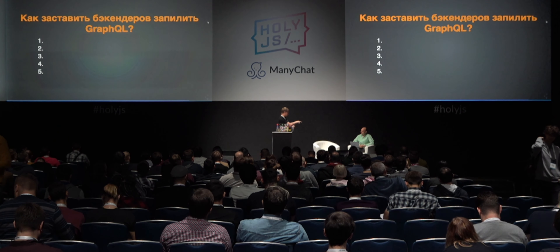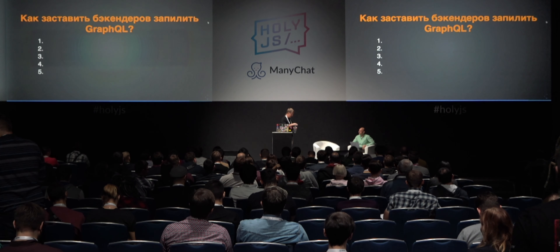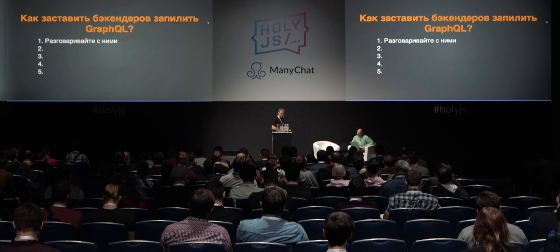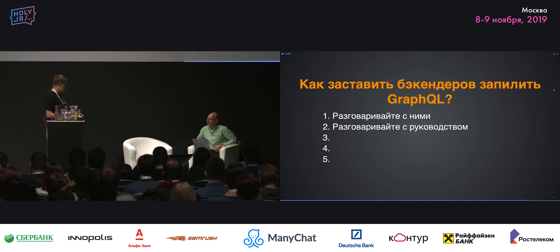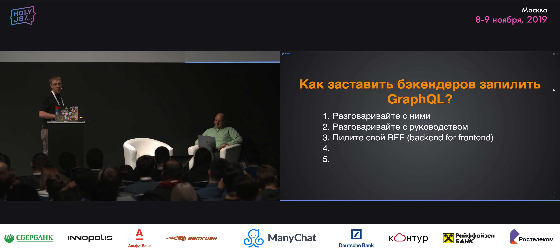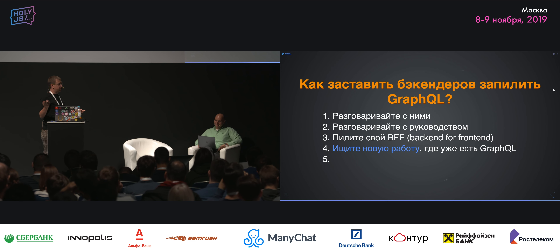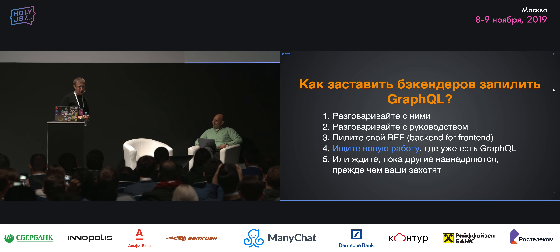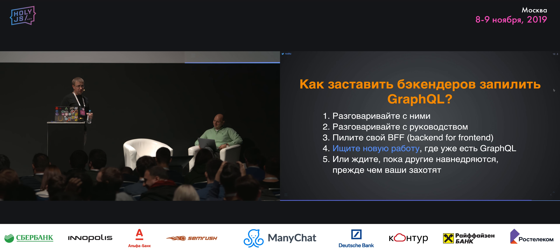Было 4 пункта, стало 5: первое — разговаривайте с бэкендерами, это же люди. Разговаривайте с руководством, тоже люди. Если не помогает ни то ни другое — пилите свой BFF. Либо ищите новую работу. Либо просто подождите, пока другие навнедряются, соберут шишек, технология станет стабильной и надёжной, и вы через годик-два начнёте внедрять GraphQL в своём колхозе.